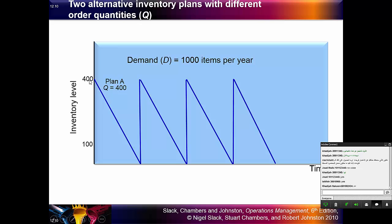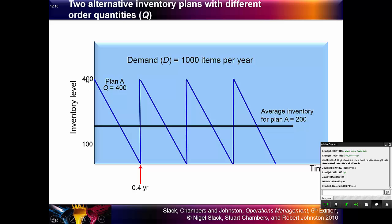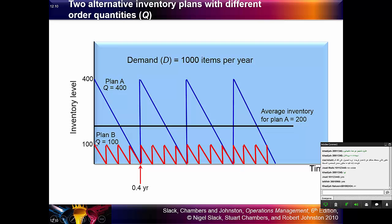The first plan is to order 400 pieces, so Q equals 400. The average inventory for Plan A equals 200 — we divide 400 by 2. In Plan B, the order quantity equals 100, and the average inventory will be 50 pieces.